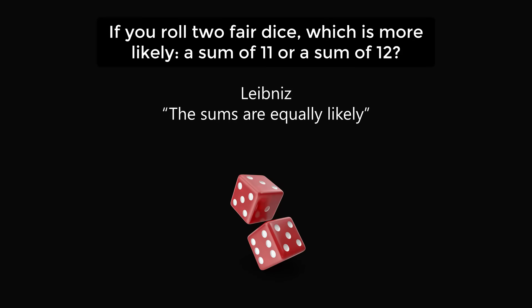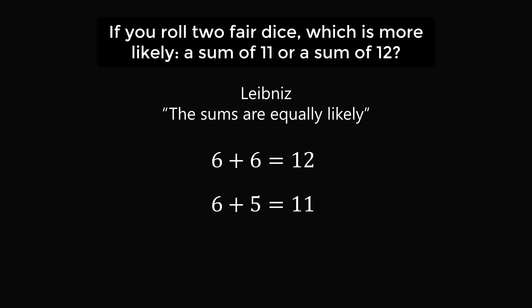Leibniz reasoned that the sums are equally likely. Leibniz said there's one way to get either event. To get 12, there's just one way, which is to roll 6 plus 6. To get 11, there's also only one way, which is 6 plus 5. However, Leibniz was overlooking the other way to get 11, which is 5 plus 6. Leibniz was definitely wrong, and the sums are not equally likely.